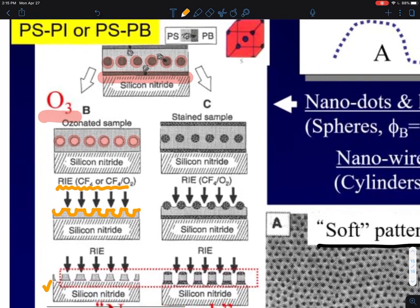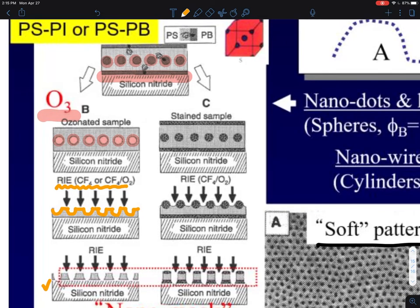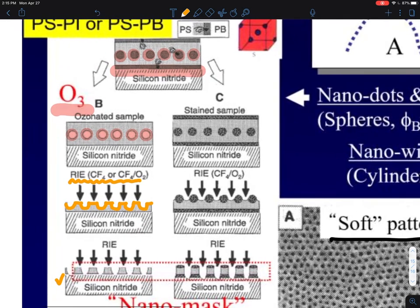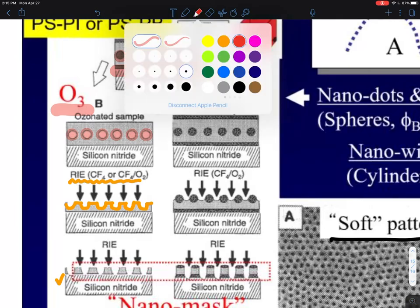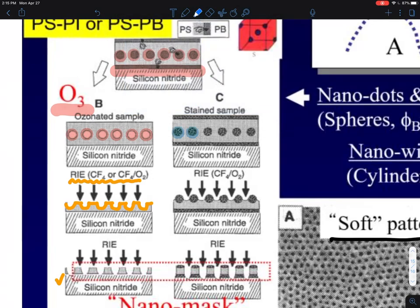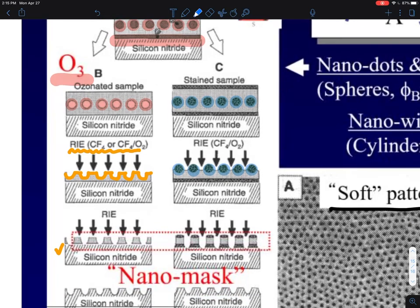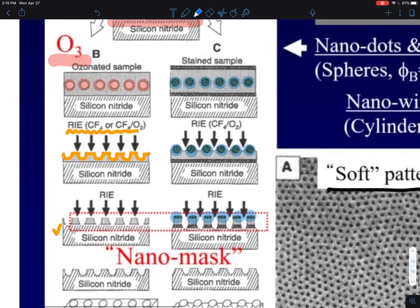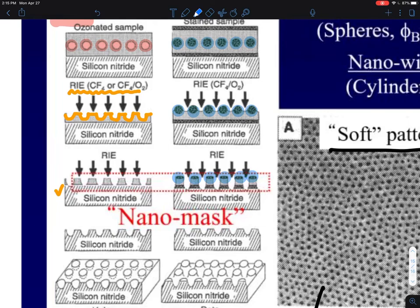The other method is they use a stain in the sample. Polybutadiene can be stained by osmium tetroxide. Once they are being cross-linked as a domain, they will be much etch-resistant. So when they do the reactive ion etching, they will be much more etch-resistant. The domains that have been cross-linked survive through, and you can etch through the silicon nitride.